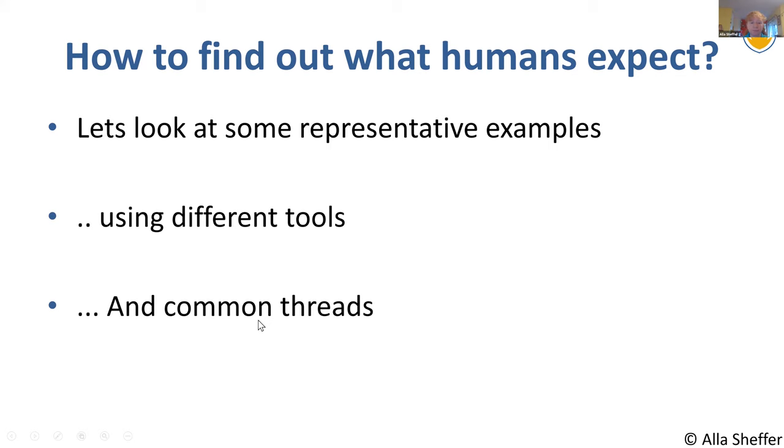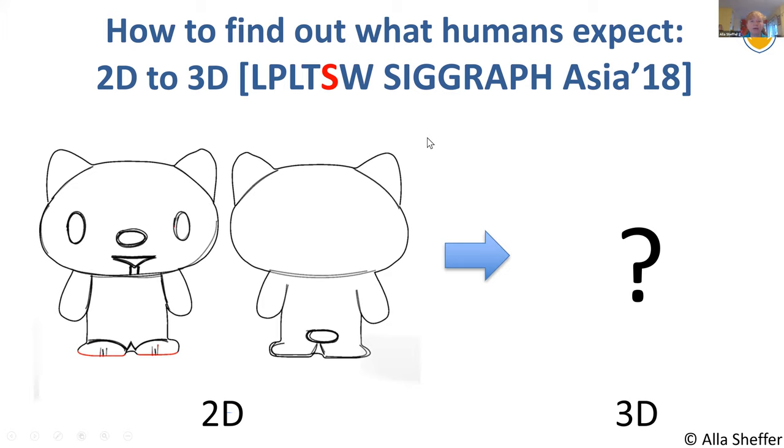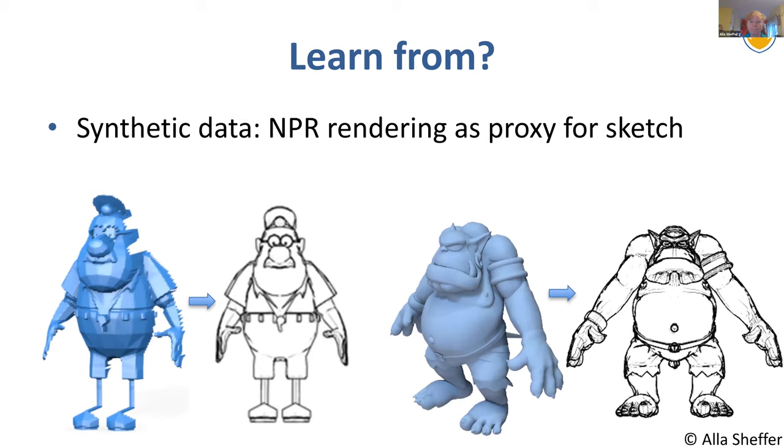So let's look at this problem of 2D to 3D. Here are two drawings, how do we create the 3D object which those drawings depict? Well, one idea is to learn from synthetic data. The argument that was made in this paper was, well, NPR rendering is a pretty good sketch proxy for human sketching. Therefore, we can think of the problem as the inverse of going from a 3D model to a drawing.